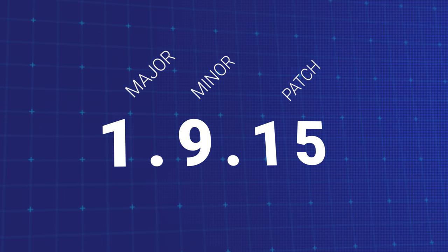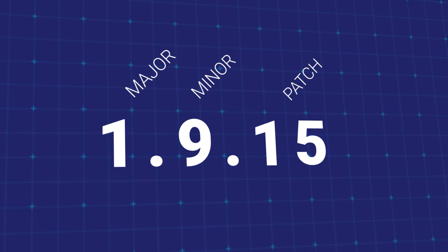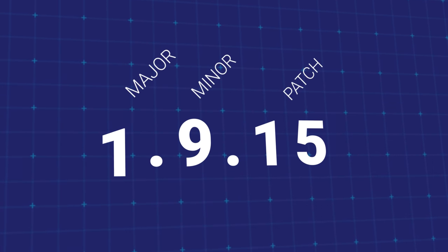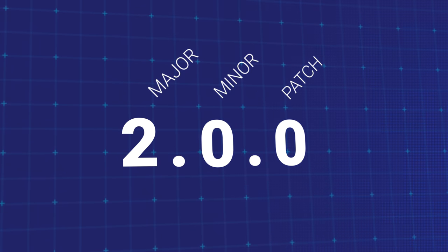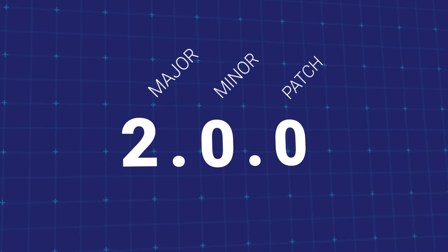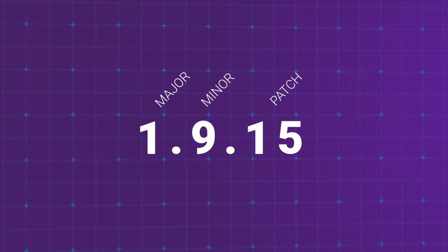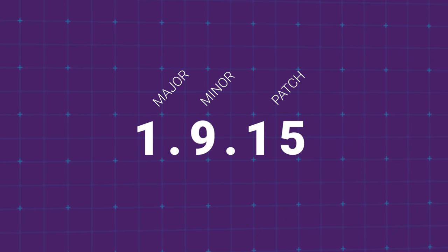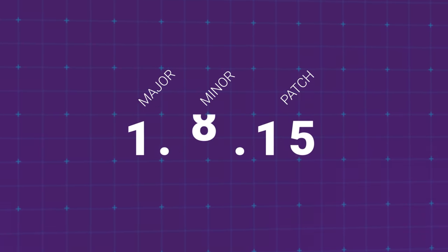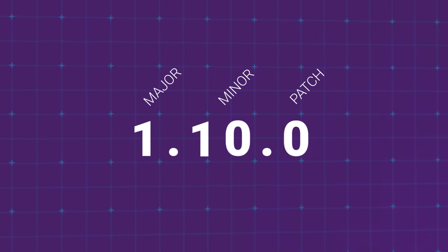For example, if the current version is 1.9.15 and the next update is a major one, the major number will change to 2, and then the minor and patch numbers will reset to 0. So the new version will be 2.0.0. Alternatively, if the next update from 1.9.15 is a minor one, the minor number would go up to 10, and the patch number would reset to 0, with the final version number being 1.10.0.